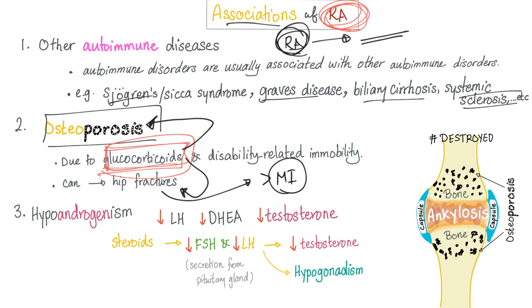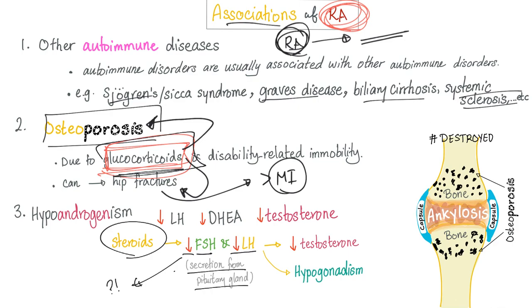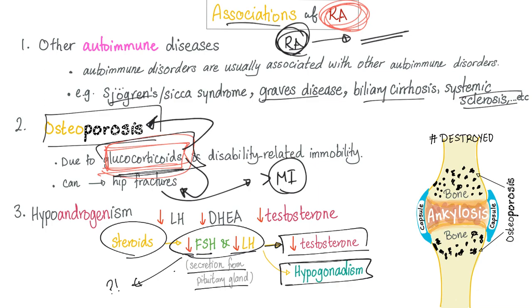Hypoandrogenism — decreased LH, decreased DHEA, and decreased testosterone. Why? Patients taking glucocorticoids experience decreased FSH and LH secretion from the anterior pituitary, leading to decreased stimulation to the testes, decreased testosterone release, and hypogonadism — because FSH and LH are essentially food for the testes. This is the same reason why professional athletes who abuse anabolic steroids (testosterone) end up with hypogonadism: big biceps, tiny testicles.